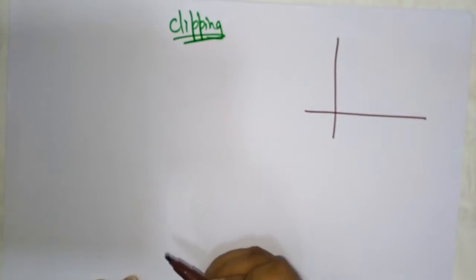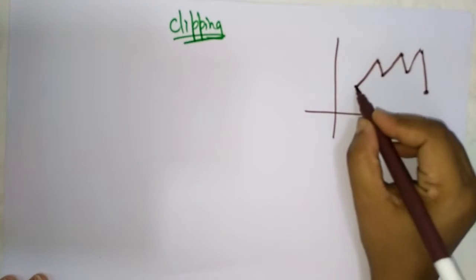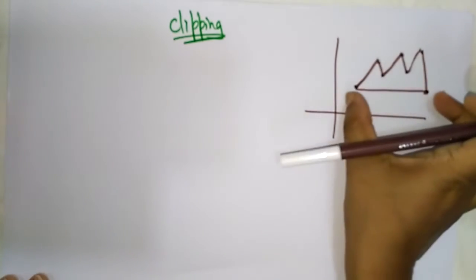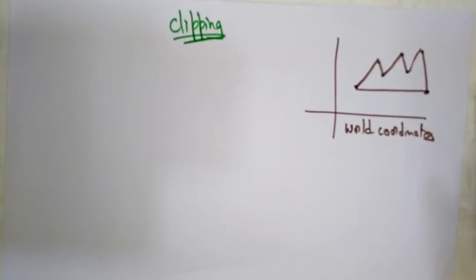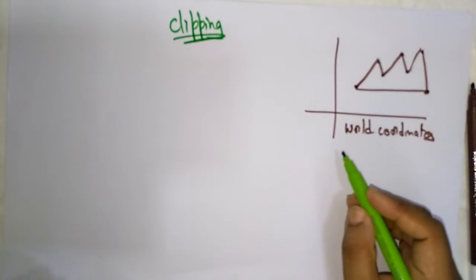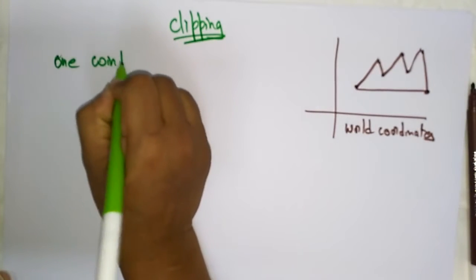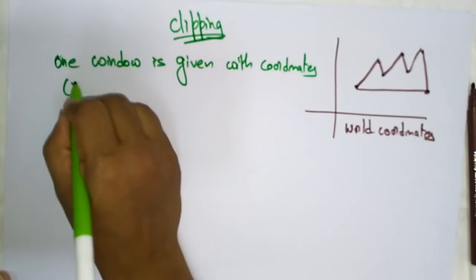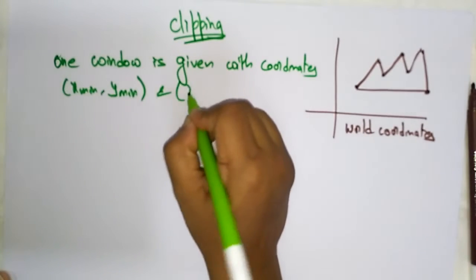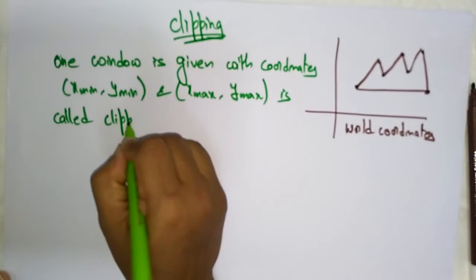Let's take this image. I want to explain the basic concept of clipping in this video. Let's take this as a picture on the screen. In the screen, we are having a picture, and these are the world coordinates. One window is given with coordinates: X minimum and Y minimum, X maximum and Y maximum — this is called the clipping window.